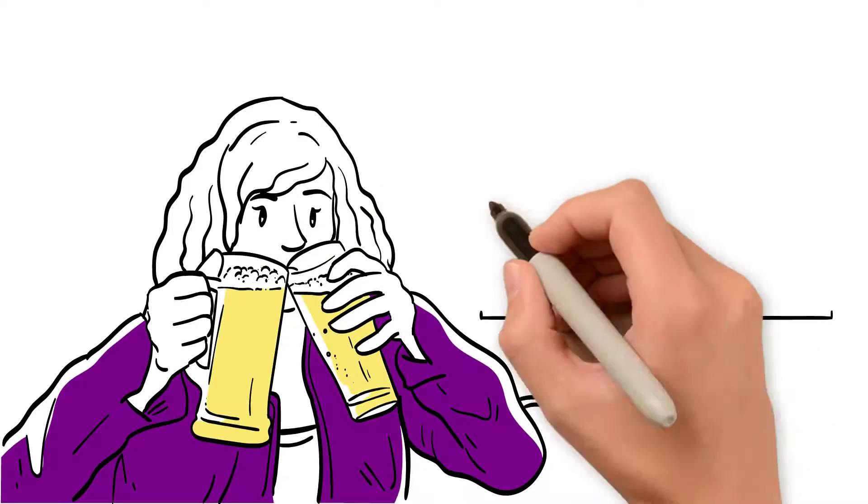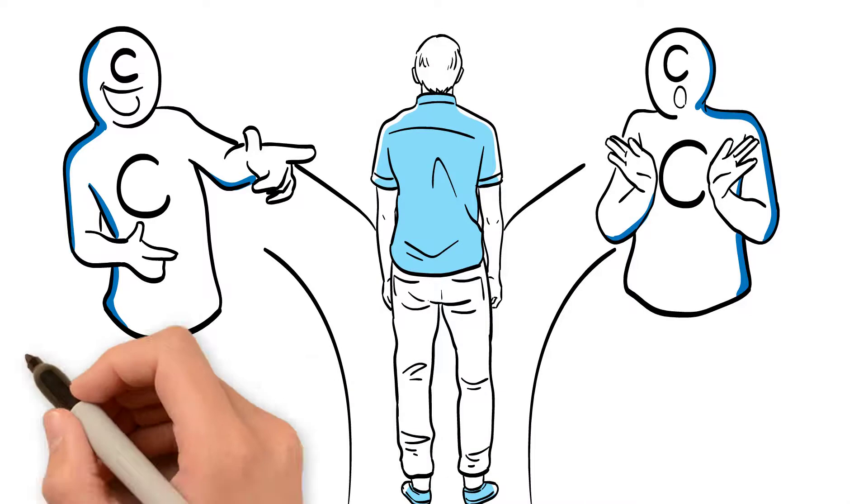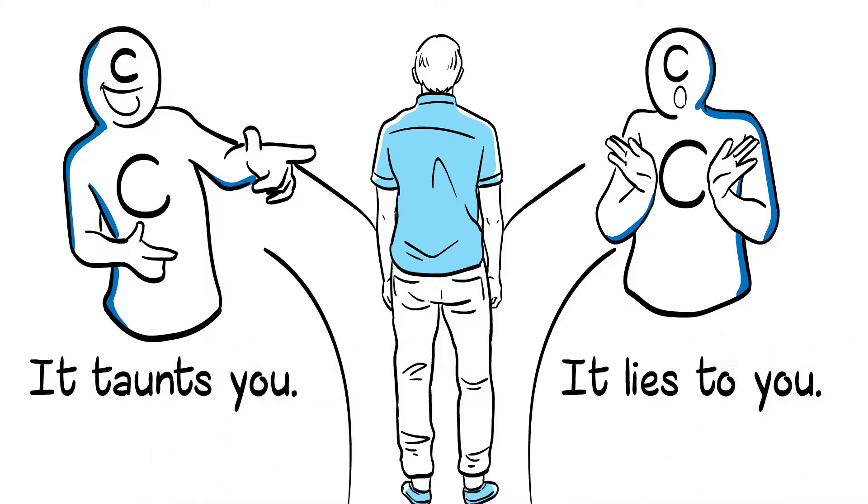Making bad choices is the lifeblood of average. It feeds it. Choice is a competitor. It taunts you. It lies to you.